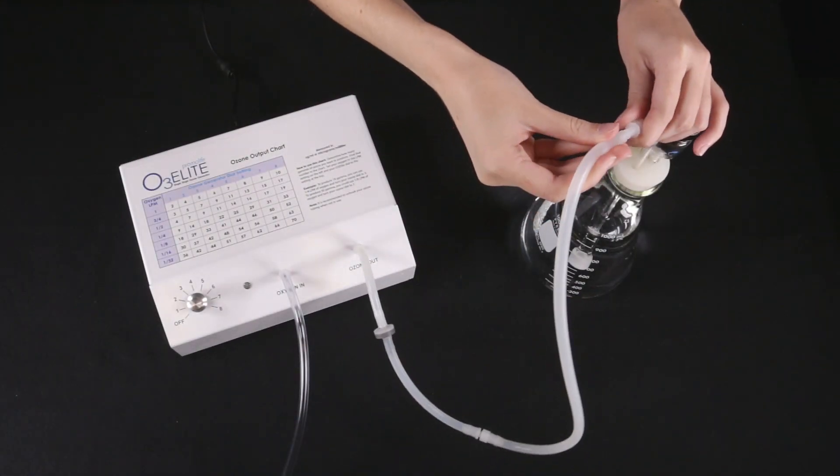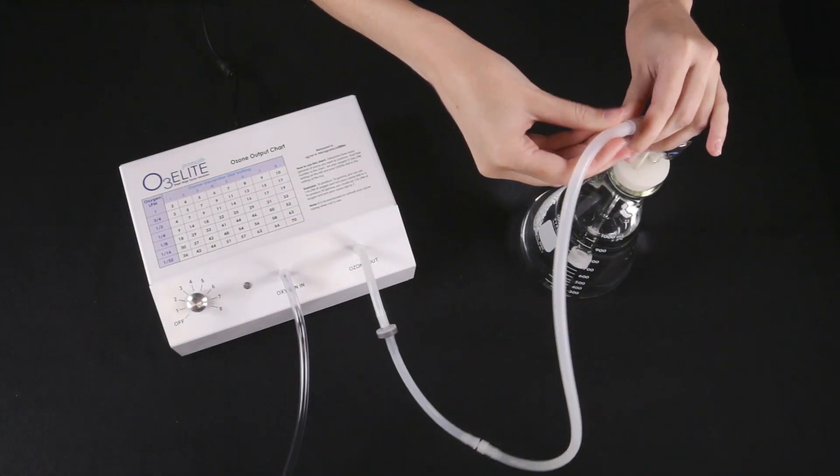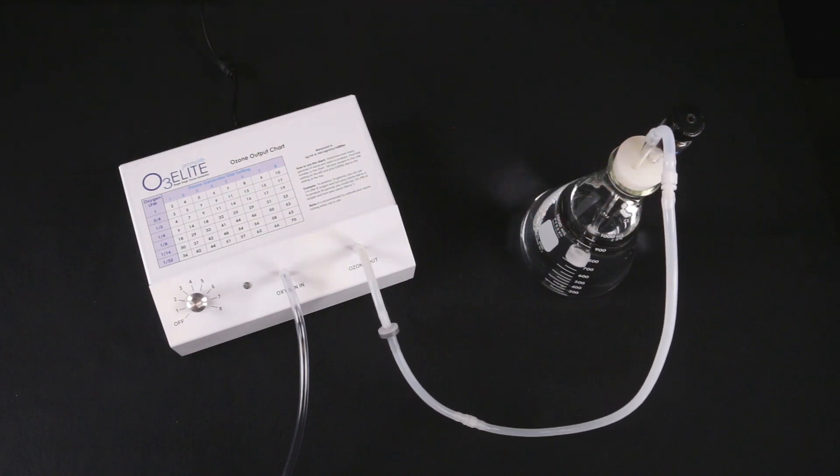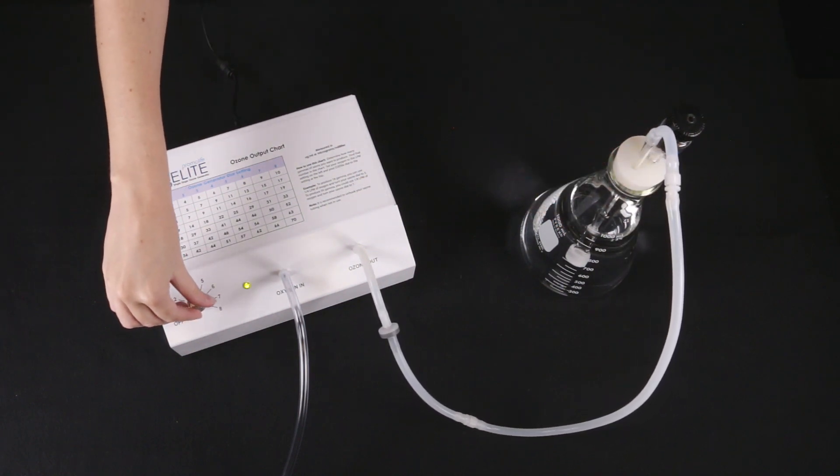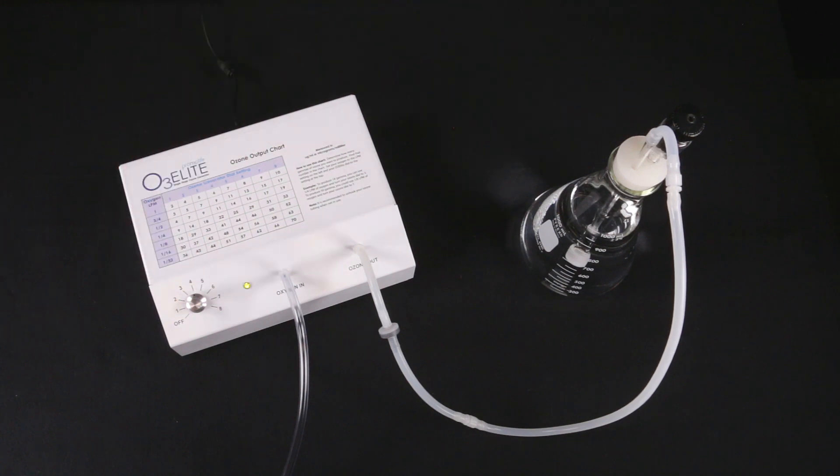Now, connect the other end of the 5 feet of silicone tubing to the Luer lock fitting on the straw. Then run the ozone through the water for at least 15 minutes or more to fully saturate the water.